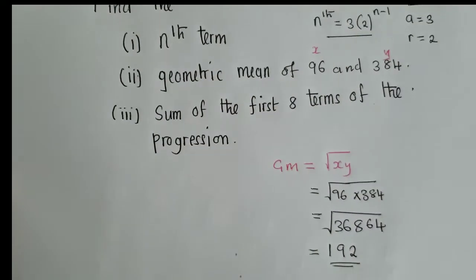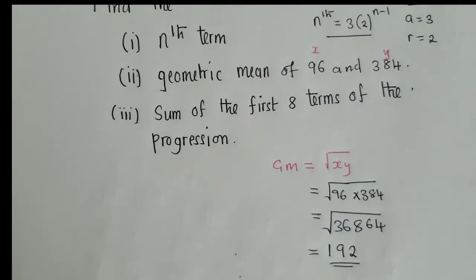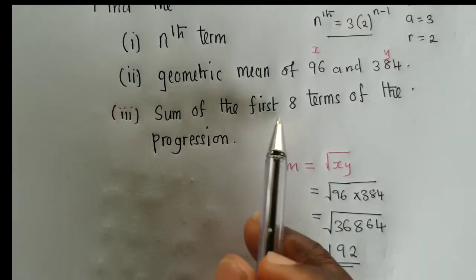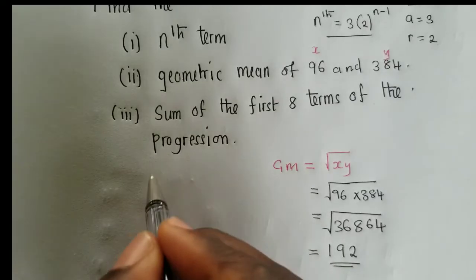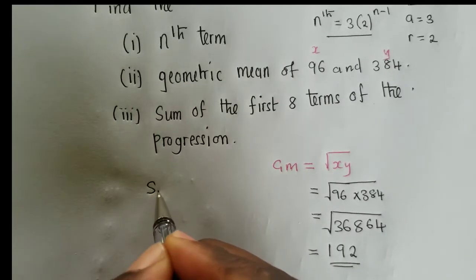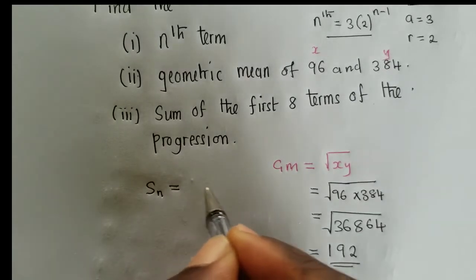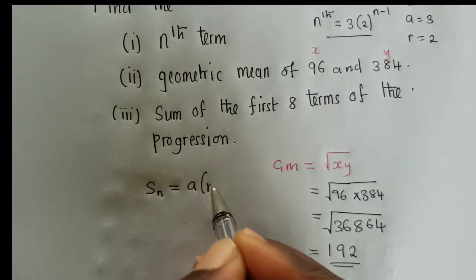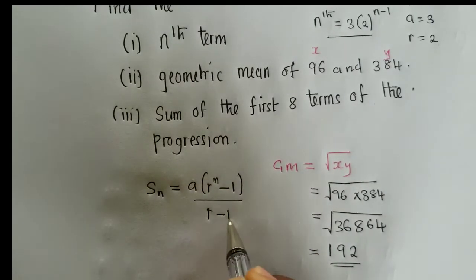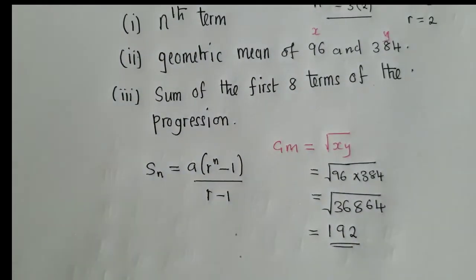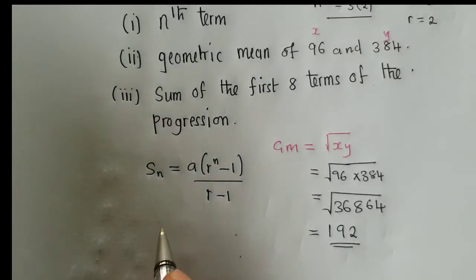So lastly, we go to sum of the first eight terms of the geometric progression. We need to use the formula sum. This is a formula right here. So we now gather our data.